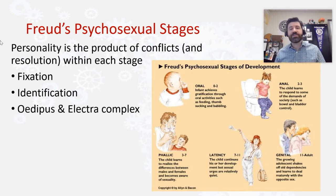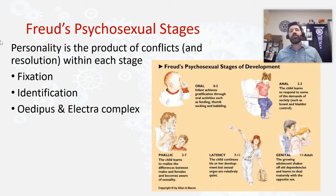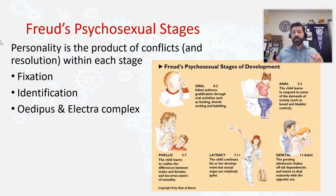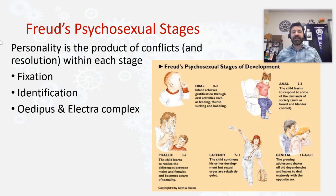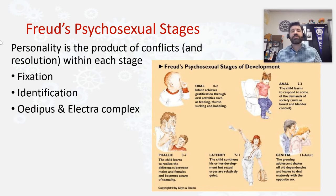Another interesting thing Freud argues happens in the phallic stage is what we call either the Oedipus complex for young boys or the Electra complex for young girls. As you identify with the same-sex parent, you also start to resent them and become jealous of them, while developing a desire to be with your opposite-sex parent. This is Freud's theory — it's over a hundred years old and pretty out of date. Family structures today in 2021 are very different, and how Freud would interpret modern family structures would likely be very different from when he was writing about this.